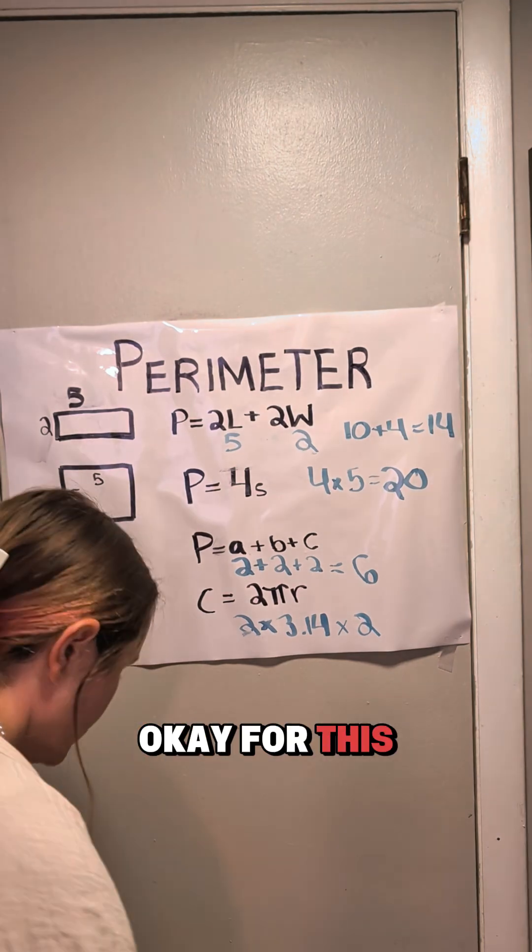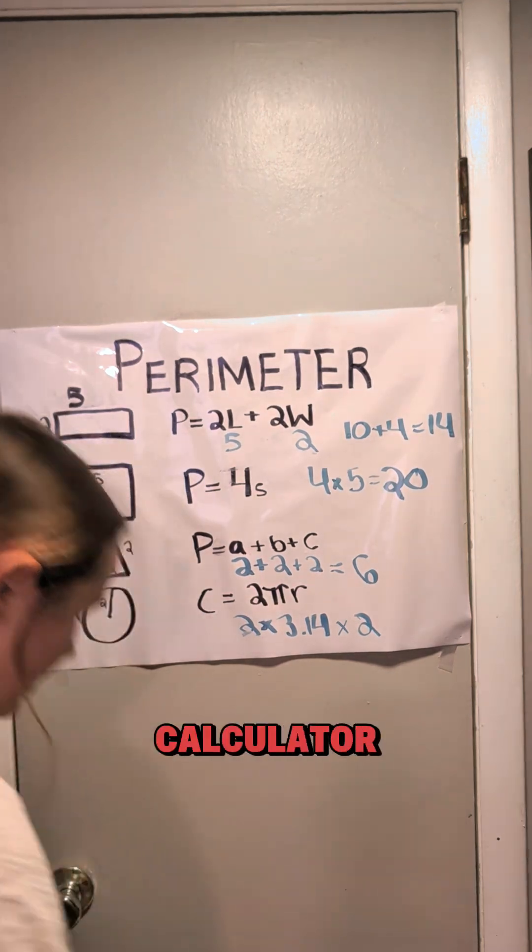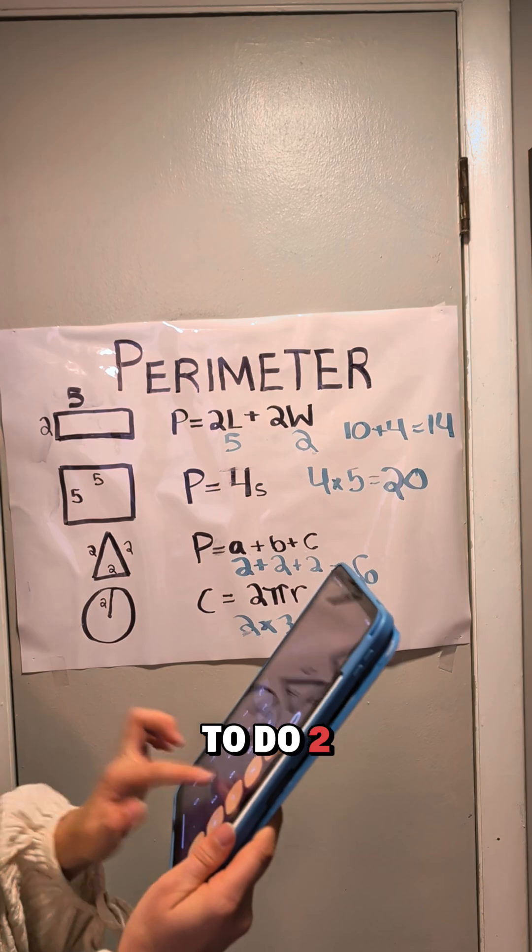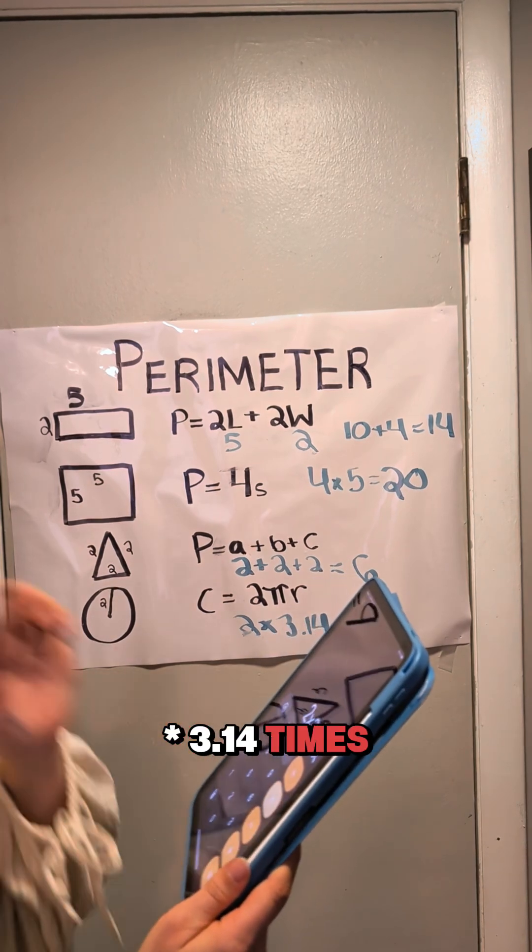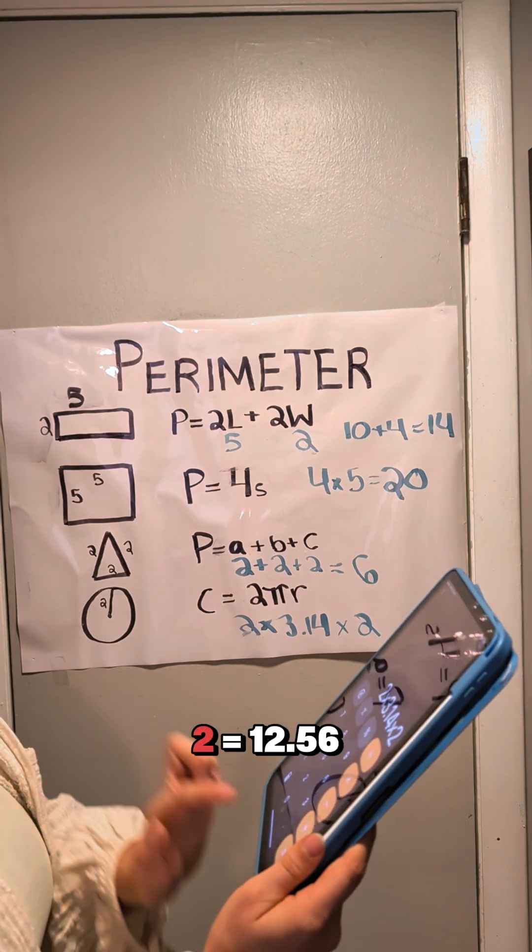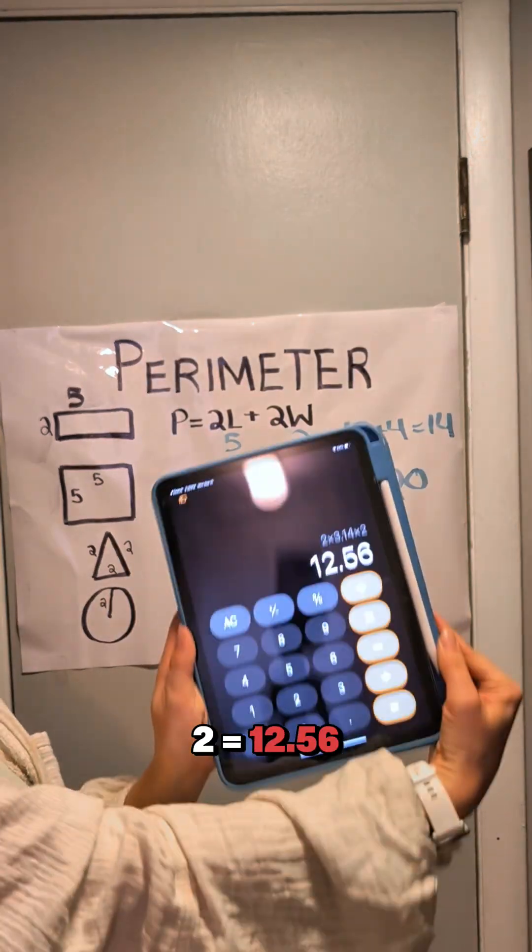For this, I am going to pull out my calculator. We are going to do 2 times 3.14 times 2 equals 12.56.